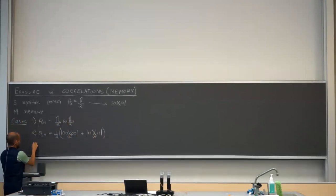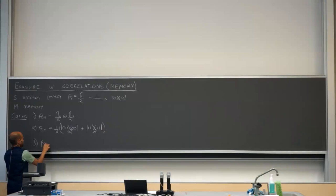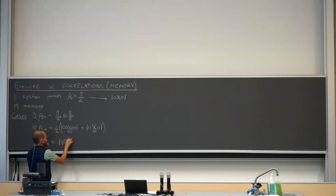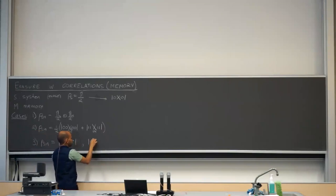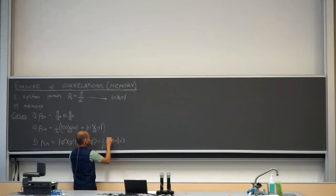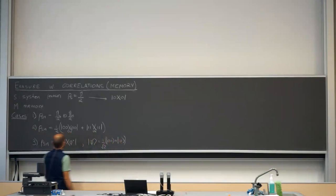In the third case, they are entangled. The state is |Φ+⟩⟨Φ+|, where of course |Φ+⟩ = (1/√2)(|00⟩ + |11⟩).